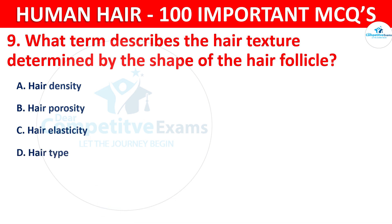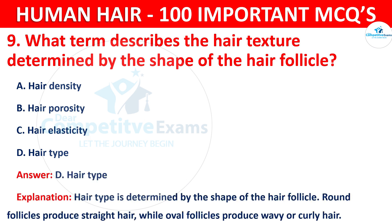The correct answer is D — hair type. Hair type is determined by the shape of the hair follicle. Round follicles produce straight hair, while oval follicles produce wavy or curly hair.